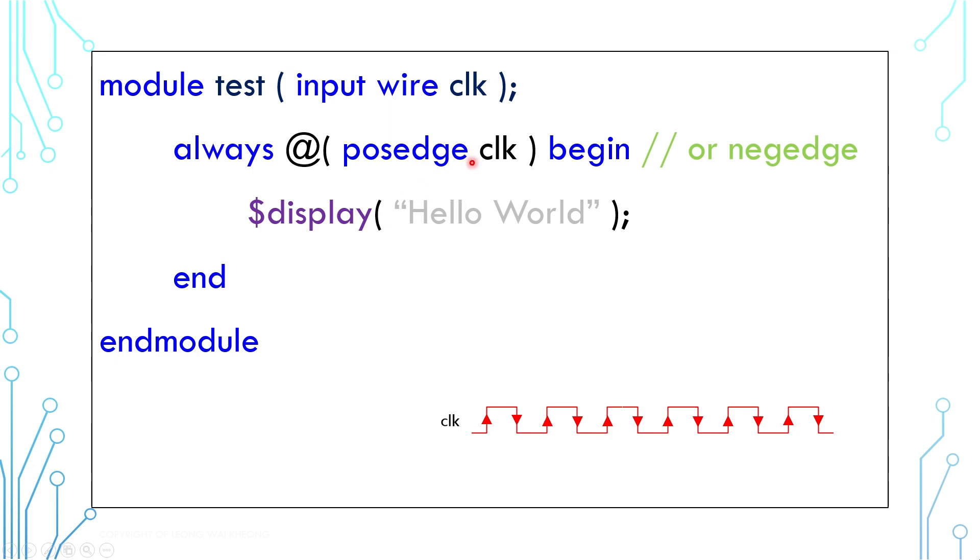In this example, Hello World will be printed only when the clock toggles from 0 to 1. Now AlwaysBlock may be synthesizable depending on how it is coded. In this video, all the examples are used to print messages, and therefore none of them are synthesizable.